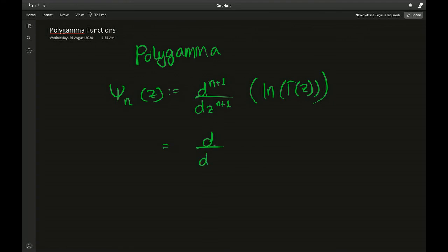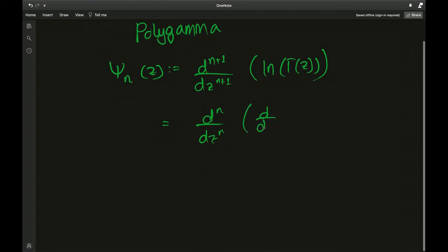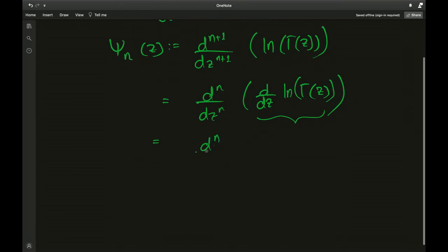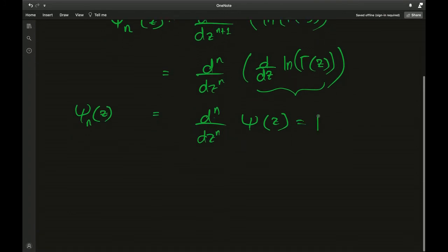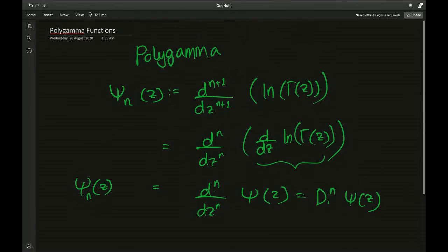If we take out one derivative from the (n+1)th derivative and let it act on the natural log of gamma of z, that just turns out to be the digamma function. So the polygamma of order n is actually the nth derivative of the digamma function — isn't that a really nice thing?